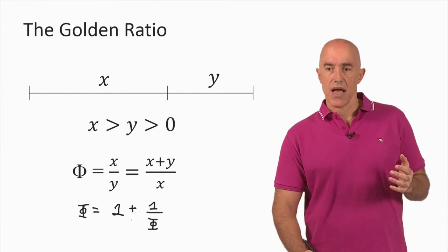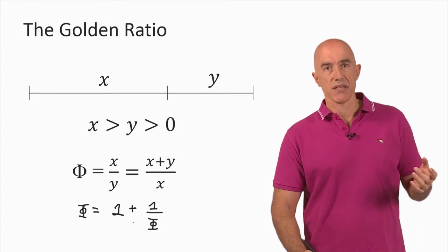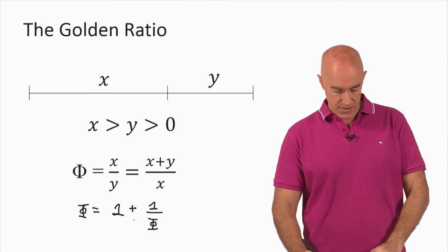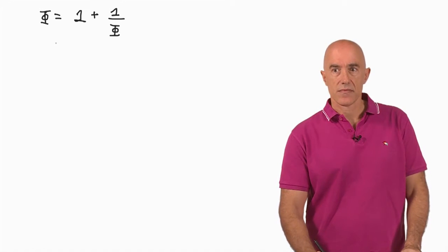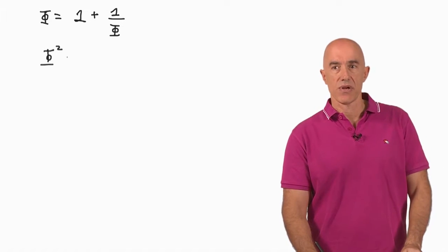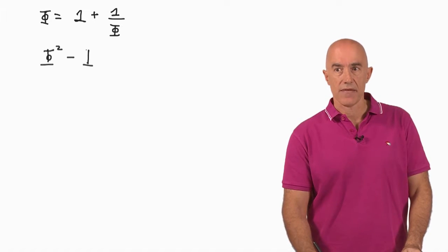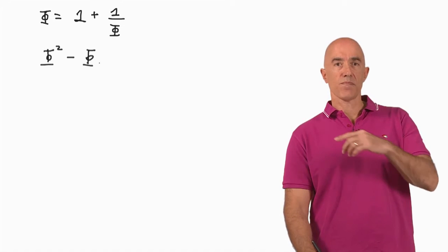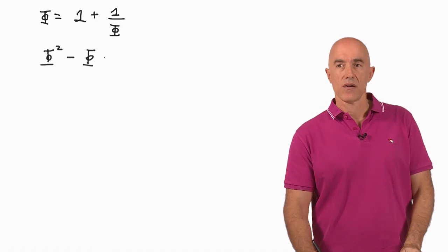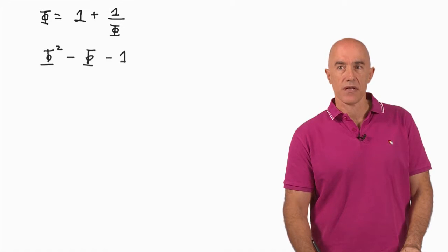We can take this equation and we can multiply both sides by Phi and then bring everything to the left-hand side of the equation. So we multiply Phi by Phi, so we get Phi squared. And then Phi squared is equal to one. We multiply one by Phi and bring it to the left side, so we get minus Phi. We multiply one over Phi by Phi, that becomes one. We bring it to the left side, so we get minus one.